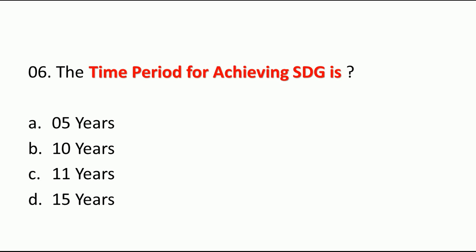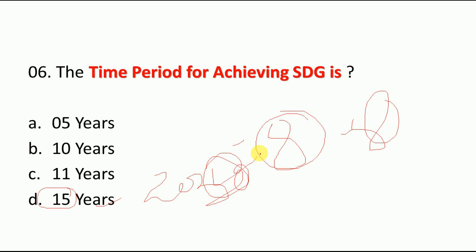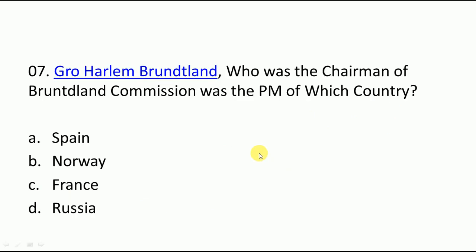What is the time period for achieving the Sustainable Development Goals? We have 15 years to achieve the 17 different SDGs. The Millennium Development Goals are 8. The deadline for SDGs is 2030, so from 2015 to 2030 is 15 years. Gro Harlem Brundtland was the Chairman of the Brundtland Commission, formed in 1983 by the United Nations. You have to answer: Gro Harlem Brundtland was the Prime Minister of which country? The correct answer is Norway.